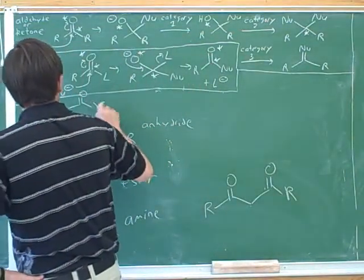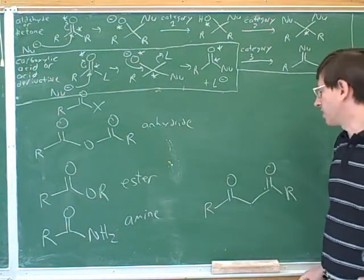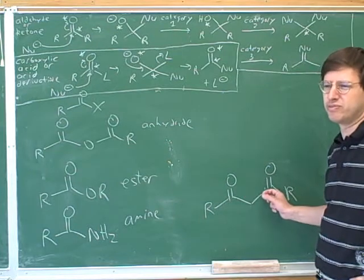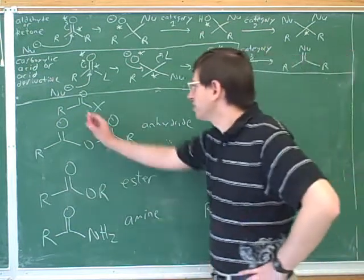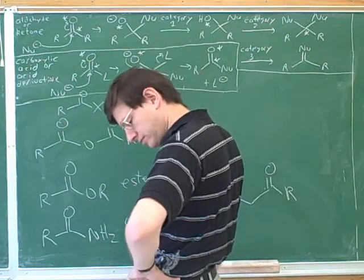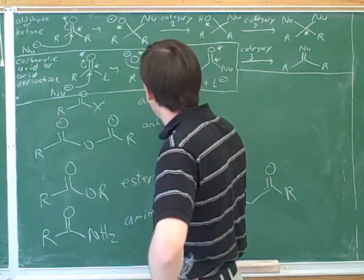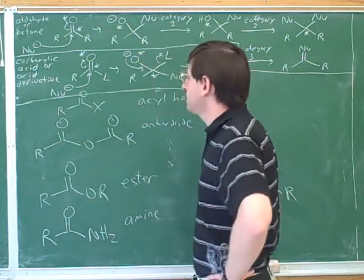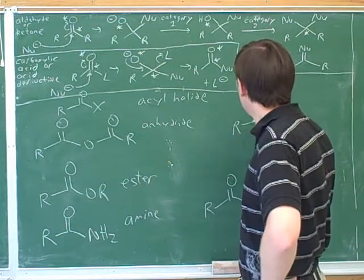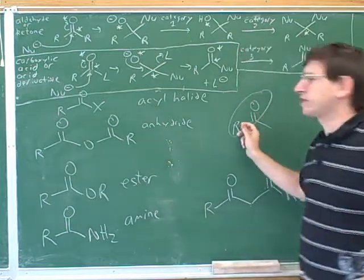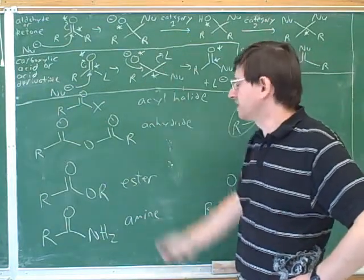What would be a general name for this? Acyl halide. We wouldn't want to call it acetyl unless we knew there were two carbons — remember, acetyl means two carbons. The general word here is acyl halide. This group is called an acyl group, so this is called an acyl halide. I think we won't go over the specific nomenclature, but we should know how to name these in general.